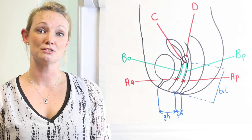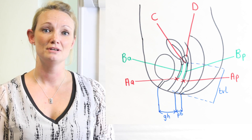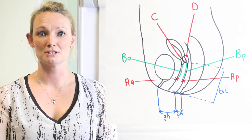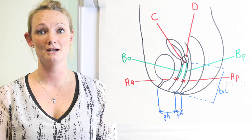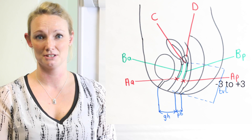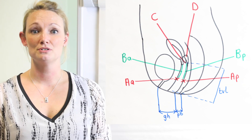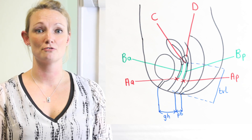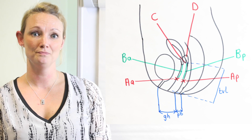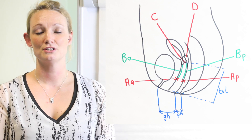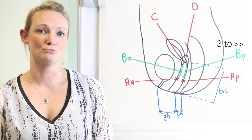AP is the point on the posterior vaginal wall, three centimetres proximal to the hymen. Again, this could range from minus three to plus three. BP is the most distal portion of the remaining upper posterior vaginal wall and can range from minus three to six, seven, eight or more.